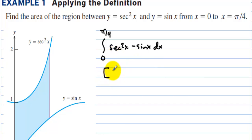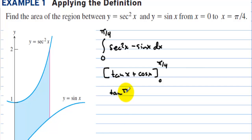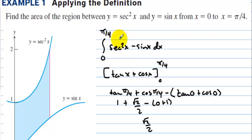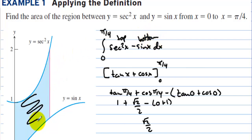The antiderivative of sec²x is tan(x), and the antiderivative of negative sin(x) is plus cos(x). Evaluating from 0 to π/4: tan(π/4) is 1, cos(π/4) is √2/2, minus tan(0) which is 0, minus cos(0) which is 1. So we have 1 plus √2/2, minus (0 + 1). The 1's cancel and the answer is √2/2.